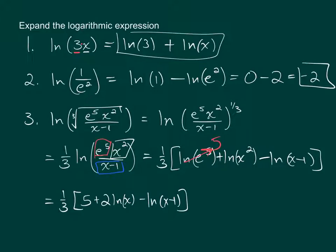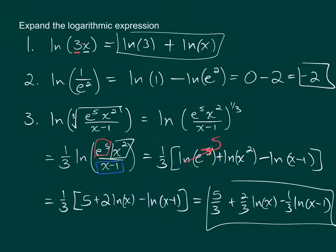And from here, the last step is to just distribute the one-third to each term on the inside, and that'll give you 5 thirds plus 2 thirds natural log x minus 1 third natural log x minus 1. And there's the expansion of the final example that we started out with.